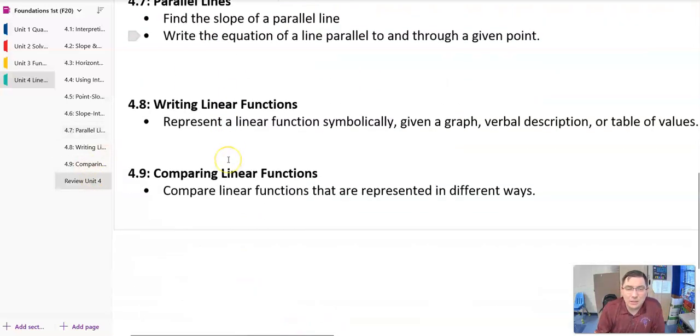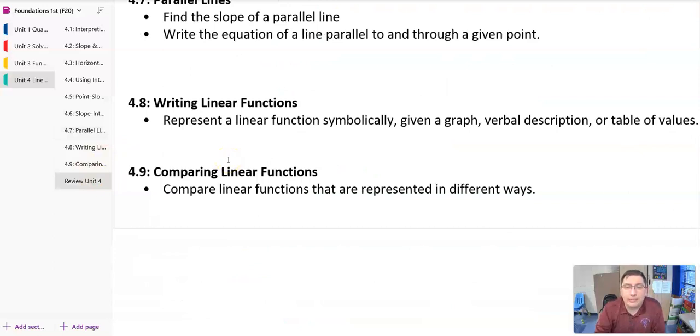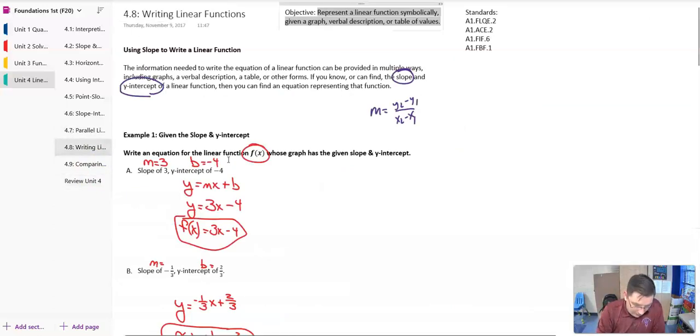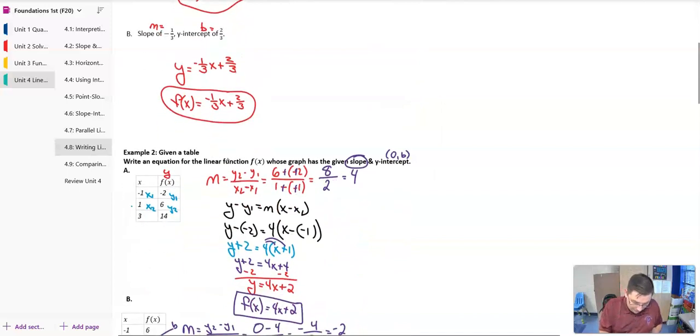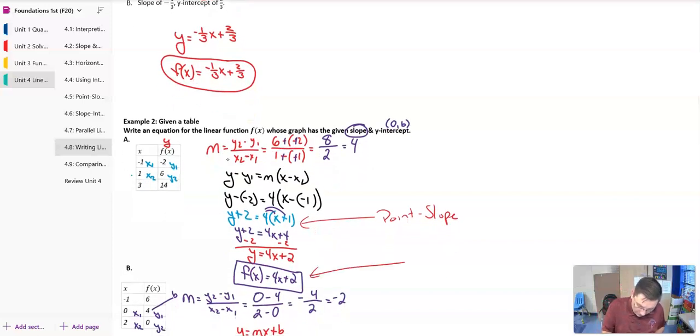In section 8, we look at writing linear functions, and we want to be able to use graphs, tables, verbal descriptions to be able to write a linear function. And remember, we're going to take all that information and whatever form it's given to us, we want to either plug it into slope-intercept form if we know the y-intercept, or plug it in to point-slope like example 2 here, and then be able to solve it into a certain form. Again, we could solve it into point-slope form and stop there, or we could solve it all the way down into slope-intercept form and even write it as a function with an f of x or g of x or whatever the function notation may be.